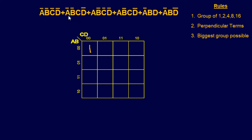Next we have A, B-not, C-not, D-not — that's a one right there. Then A, B-not, C, D-not — another one. Next, A-not, B, D-not — A-not is the first two rows, B is its row, and D-not covers those columns, giving us two cells. Finally, A-not, B, D — same row, and all the ones with D — giving two more cells. This creates the K-map as you see here.